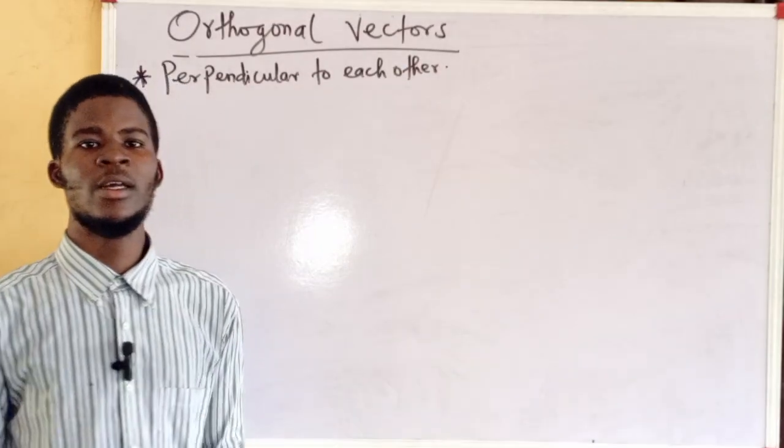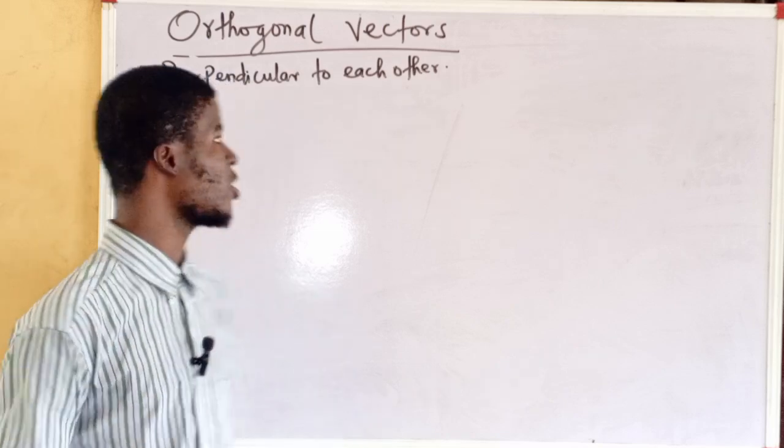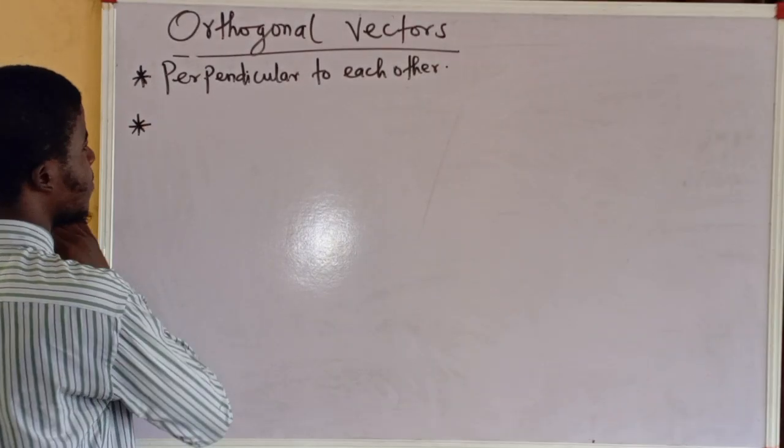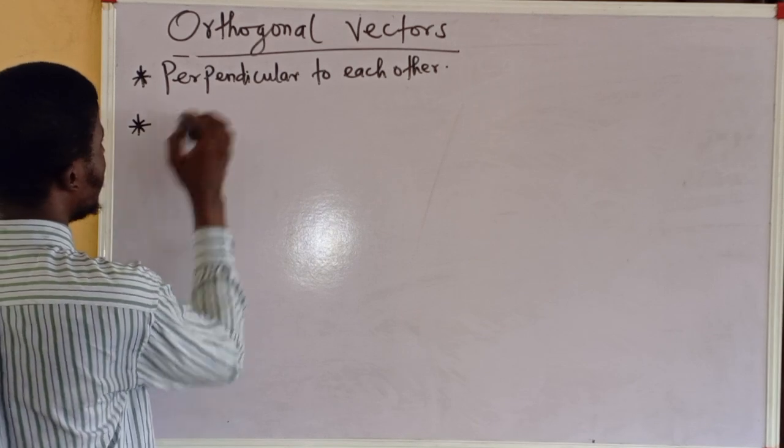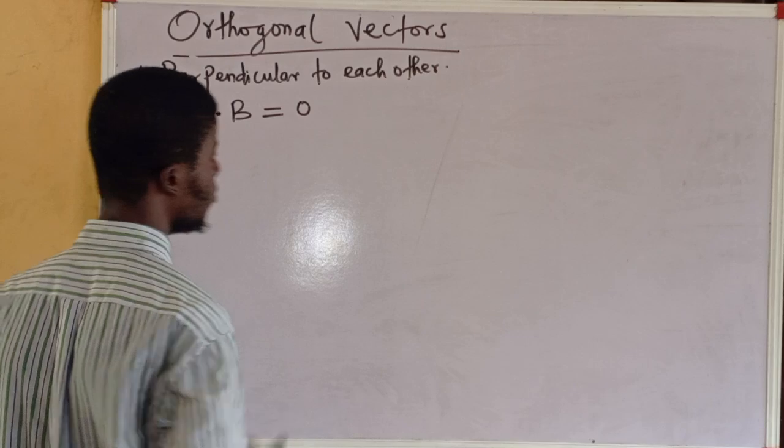Mathematically, their dot product is equal to zero. So, given two vectors A and B that are orthogonal, mathematically the dot product of A and B is equal to zero.